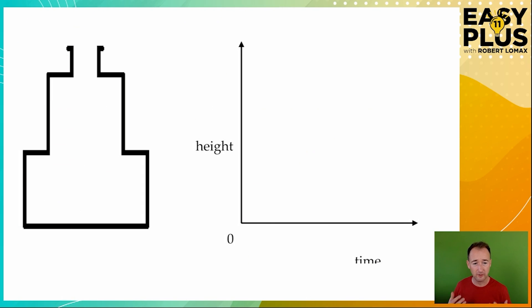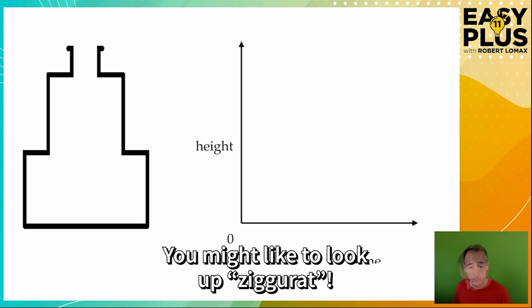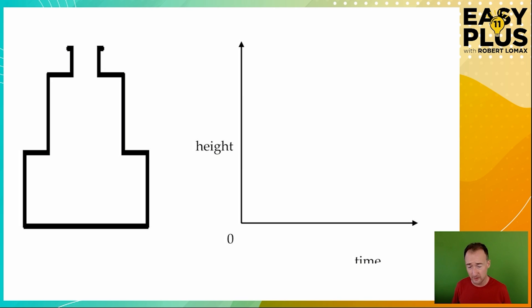So here we've got some kind of rather interesting ziggurat like container. We can see that there are three sections, each of which has a consistent width or diameter. One, two, three. So each of these is going to need a straight line and we can see that the bottom one is going to fill comparatively slowly, the middle section a little faster and then the top section really quickly because it's much, much narrower.